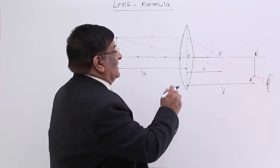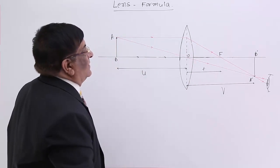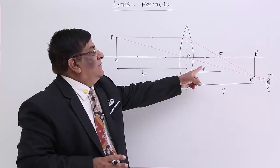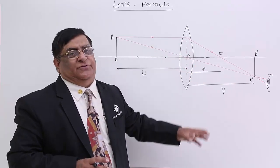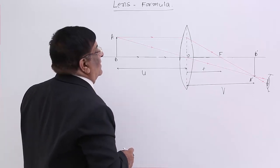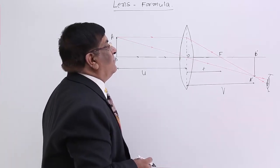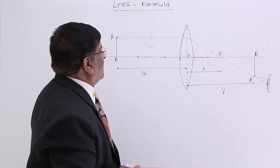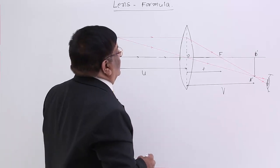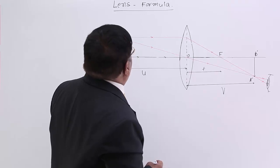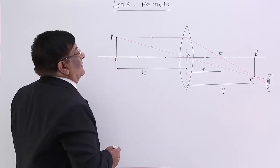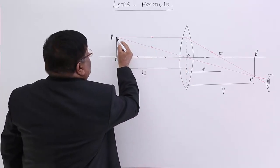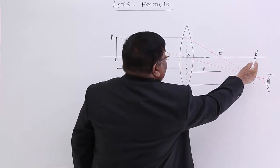We find the relation between U, V, and F using two things: number one, the rules of refraction we have applied, and number two, geometry. For geometry, we will find similar triangles as done in earlier derivations.